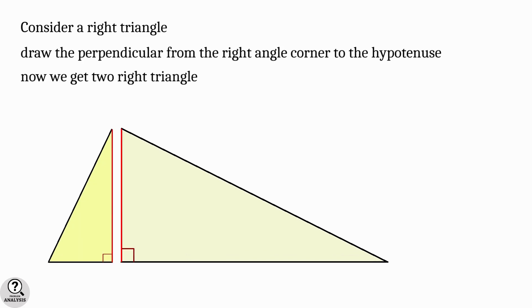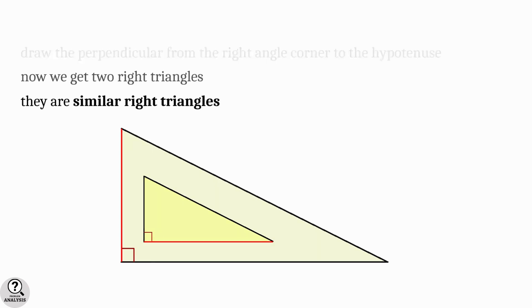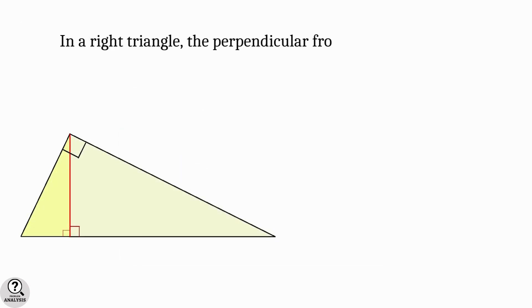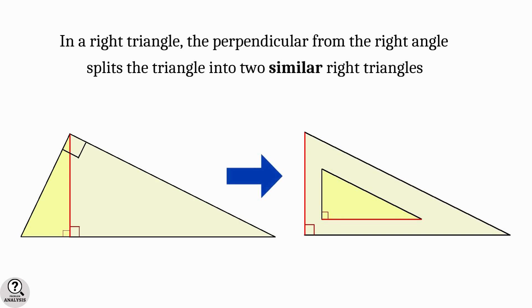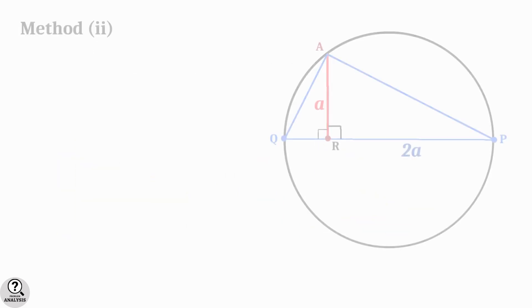Consider a right triangle. Draw the perpendicular from the right triangle corner to the hypotenuse. Now we get two right triangles, and the theorem says that those triangles are similar right triangles. That is, in short, in a right triangle, the perpendicular drawn from the right angle corner splits the triangle into two similar right triangles.